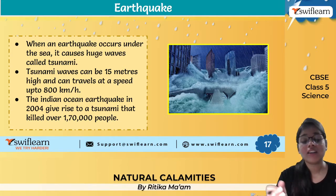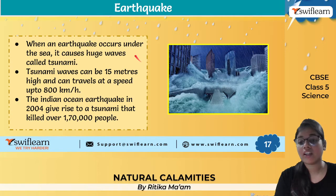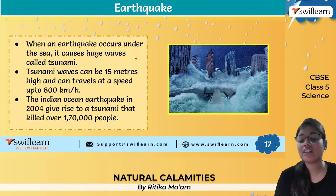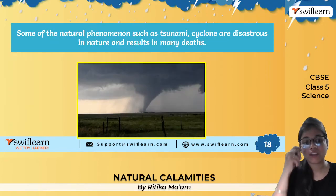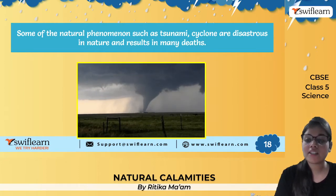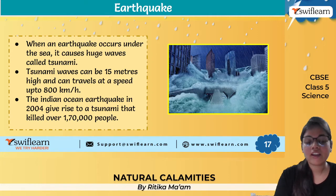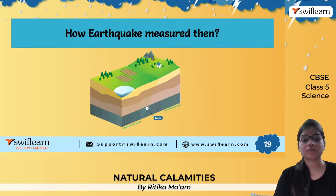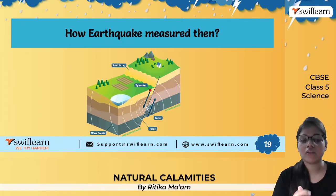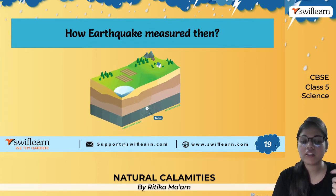In the year 2004, the Indian Ocean earthquake gave rise to a tsunami that killed about 1,70,000 people. It can be as massive as this and lead to this much destruction — so many people lost their lives, not counting property damage. Some natural phenomena such as tsunamis and cyclones are disastrous in nature and can result in many deaths.